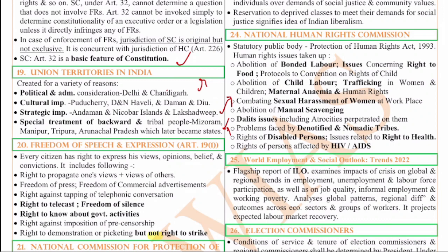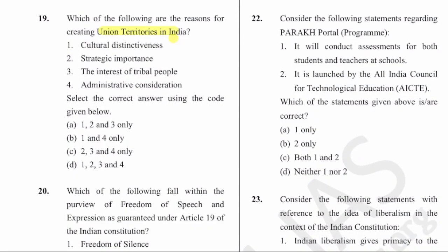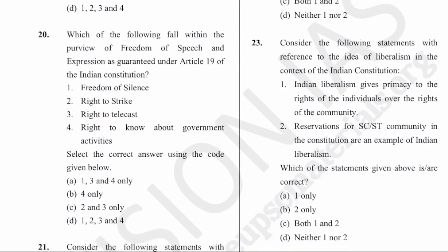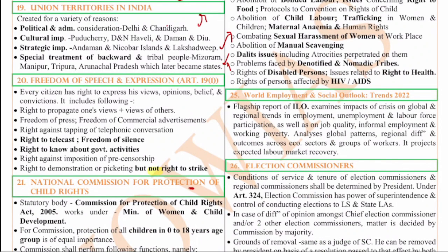Union territories in the northeast like Manipur, Nagaland, and Mizoram have now been made into permanent states. The 20th question is on freedom of speech and expression guaranteed under Article 19. Article 19 holds great importance among all the fundamental rights. It is available to all citizens to express their views, opinions, beliefs, and convictions. It includes right to propagate one's views, freedom of press, right against tapping of telephonic conversations, right to telecast, freedom of silence, right to know about government activities, right against pre-censorship, and right to demonstration or picketing - but no right to strike.